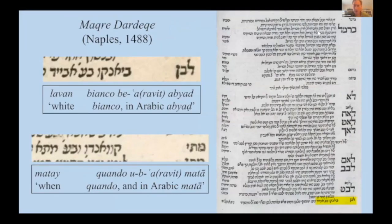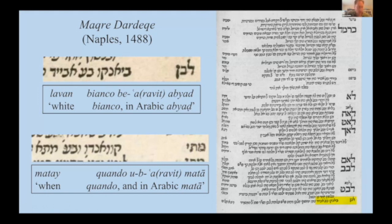Here is a page of a trilingual dictionary — a Hebrew dictionary with glosses in Judeo-Italian and Judeo-Arabic, published in 1488 in Naples. On the left, you see the word lavan in Hebrew, the word for white, and then it says 'bianco' — the Italian — and in Arabic 'abyad.' Or the Hebrew word matai, 'when,' is glossed as 'quando' in Italian. From a linguistic point of view, the texts shown so far have very little to offer — the Italian part has no special features other than the use of the Hebrew alphabet and the occasional mixing in of Hebrew words.